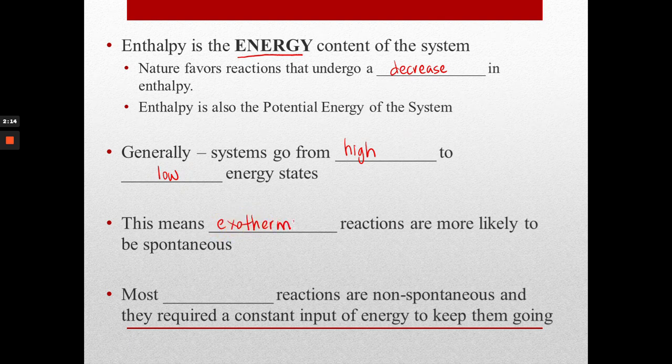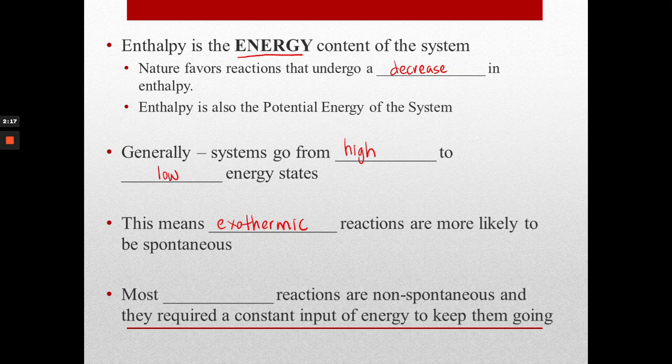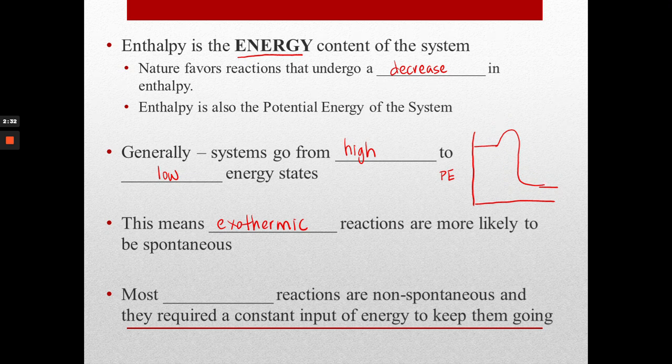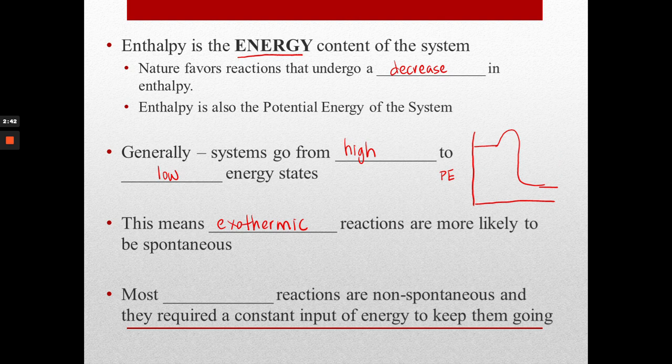So I'm just going to review here for you. This is our potential energy diagram. Our reactants are high, our products are low, and once we get over the hump, we have gone from a high energy to a low energy. That is meeting the requirement of enthalpy for a spontaneous reaction. And it's releasing energy which can then go back in to help the next set of reactants get over the hump. So most exothermic reactions are likely to be spontaneous.